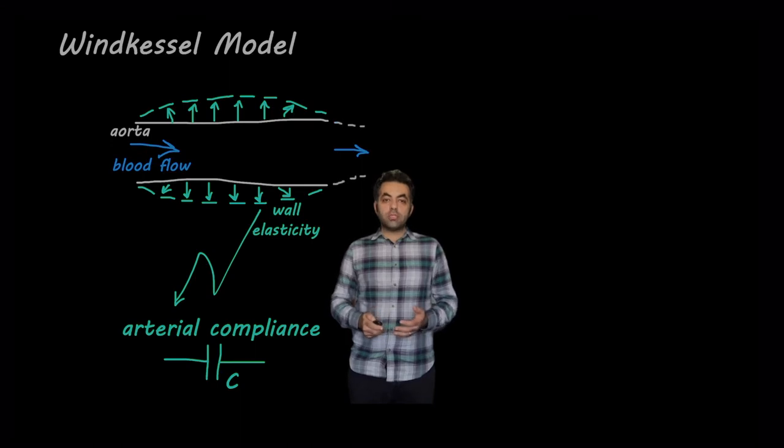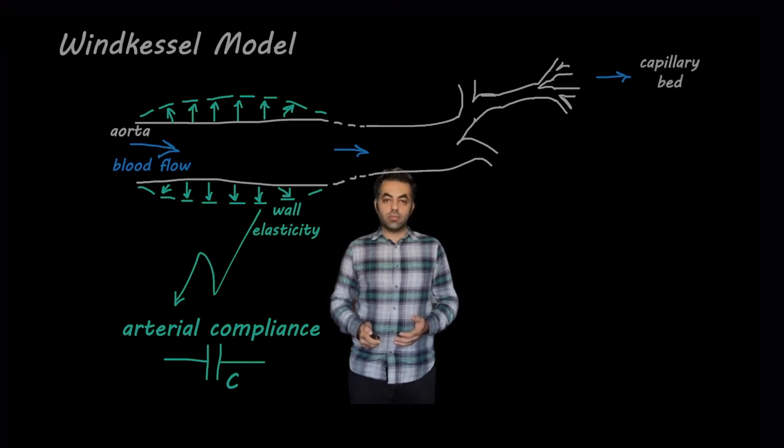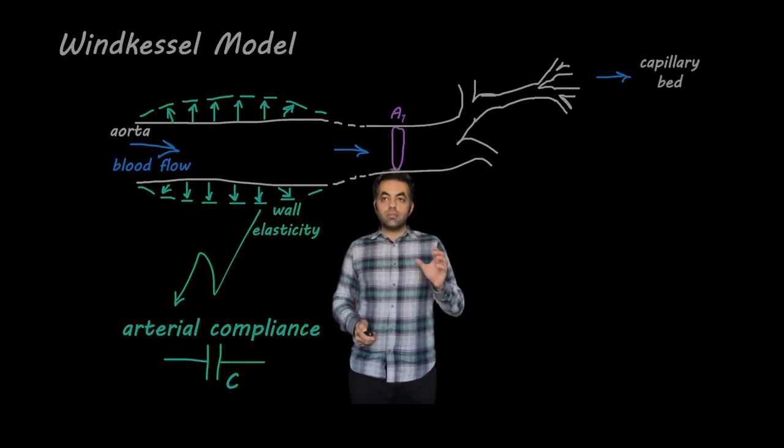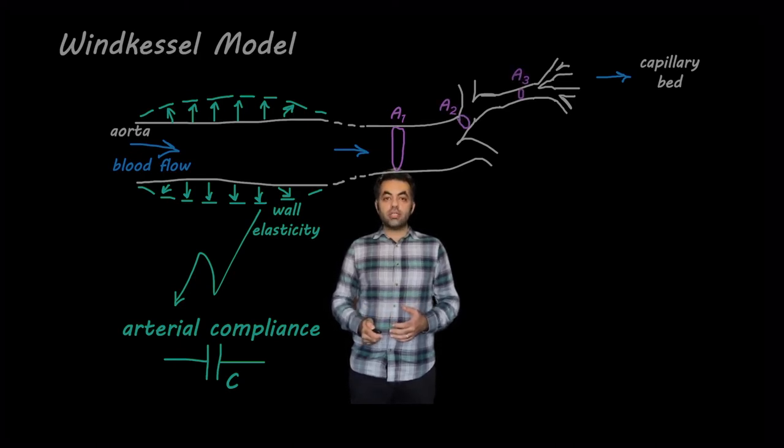Now, after the blood is pushed to downstream arteries and downstream vessel network, we see that the cross-sectional area in the downstream arteries gets smaller and smaller and smaller.